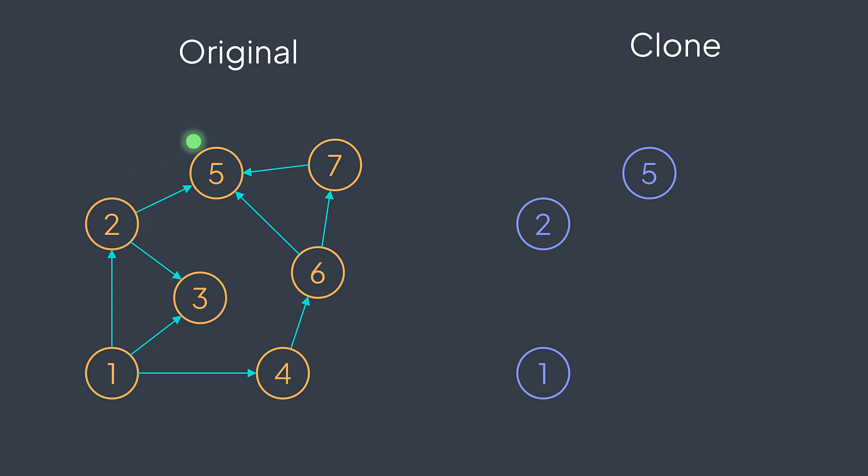Now this one has no neighbors, so we return the node we created. It enters in neighbors of the previous node and we backtrack. Next neighbor is three, we create a node with the same value. No neighbors, we backtrack. The return node enters in neighbors because we're inserting the node returned by the recursive call.